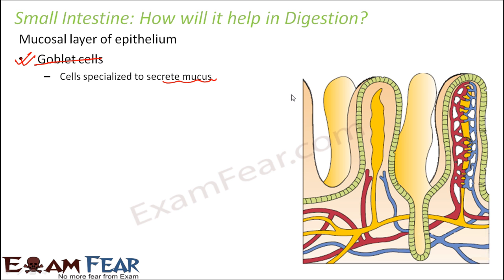Mucus has the capability to make the medium alkaline. Now since the food or the chyme is coming from the stomach, which was highly acidic, having something which can make the medium alkaline is advantageous. So mucus helps to make the medium alkaline.